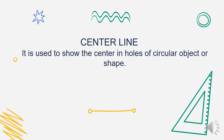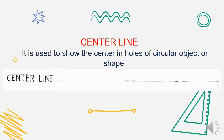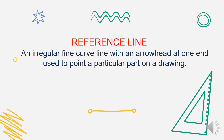Next is the center line. It is used to show the center in holes of circular objects or shapes. The center line is thin and has a long dash in the middle, a short dash, and then another long dash. It is usually used for circular objects or drawings with circles. That is the center line.